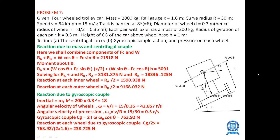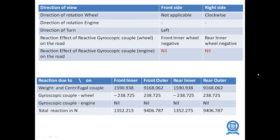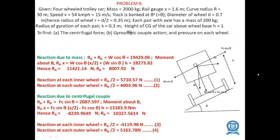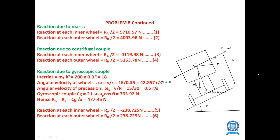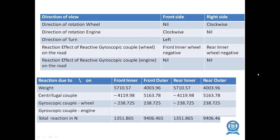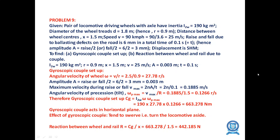A similar problem for a four-wheeler trolley car: given mass, rail gauge, curve radius, speed, angle, diameter, and each pair has mass = 200 kg. The centrifugal force and gyroscopic couple are found using the given formulas, and all values are noted in the tabular column. This is also a problem for a locomotive driving wheel. Thank you.